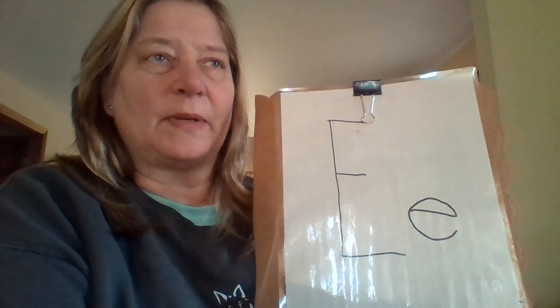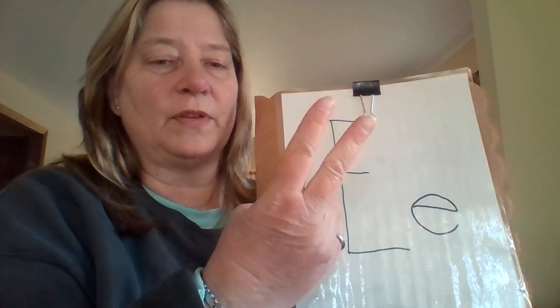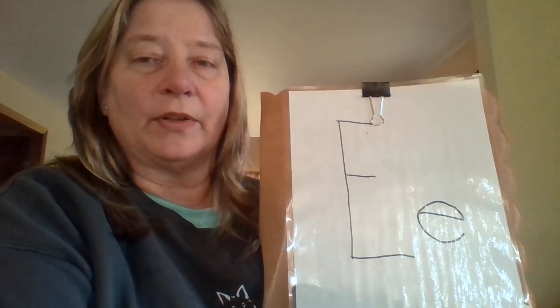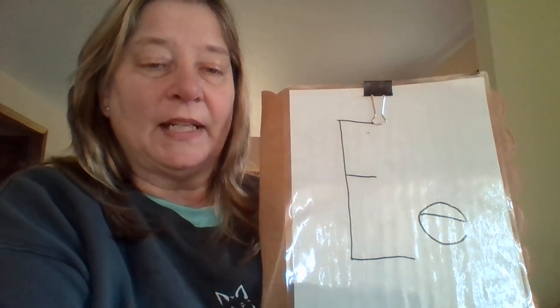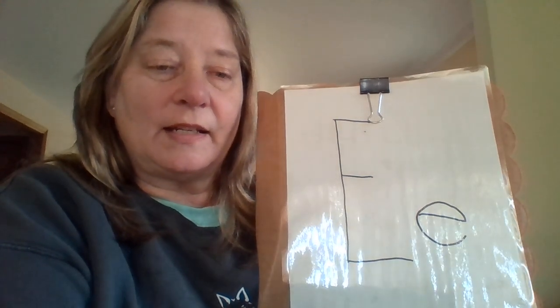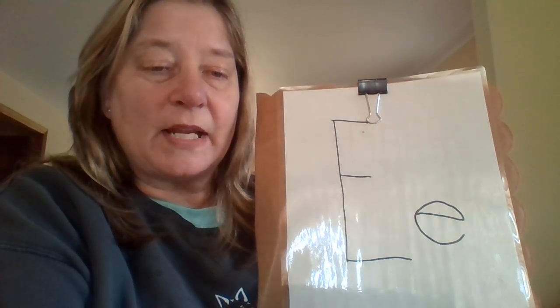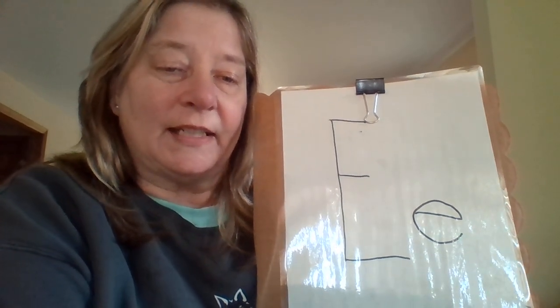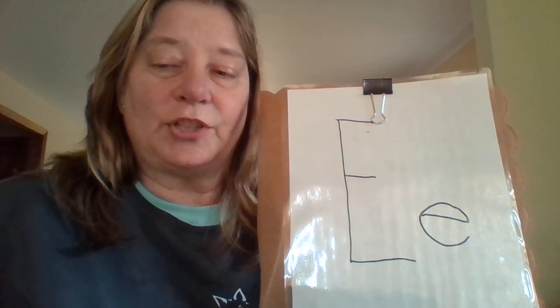Now let's think about the E sounds. E is that special letter that makes two different sounds. So when it makes two sounds, we know that one of them is its name. E says E. Every letter makes the sound — E says E. And the other sound it makes is E. E says E. Every letter makes the sound — E says E. Good job, guys.